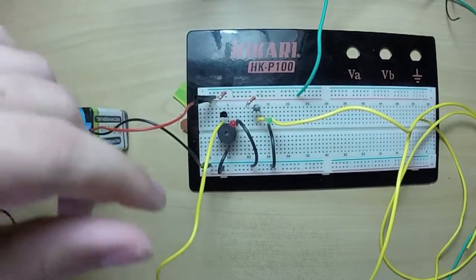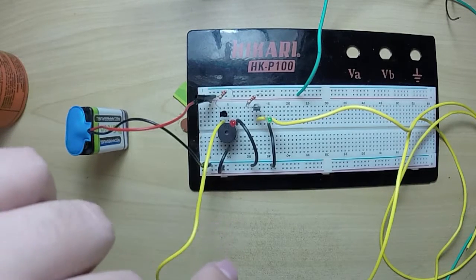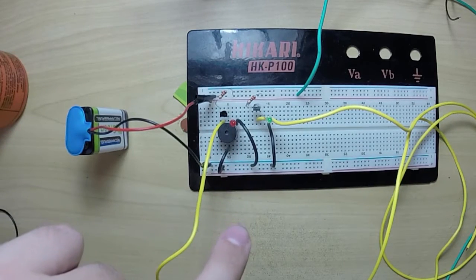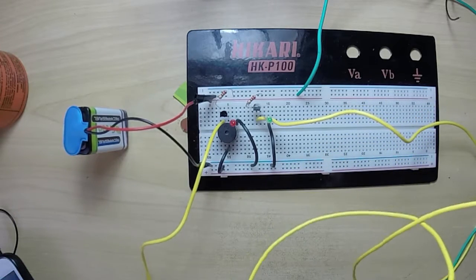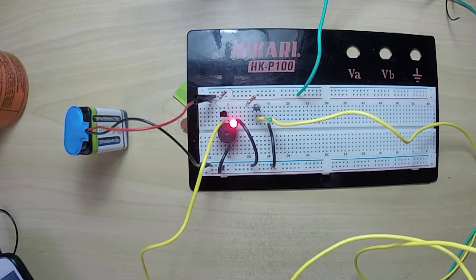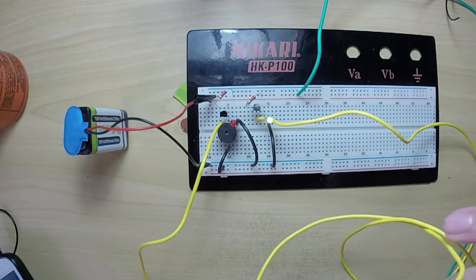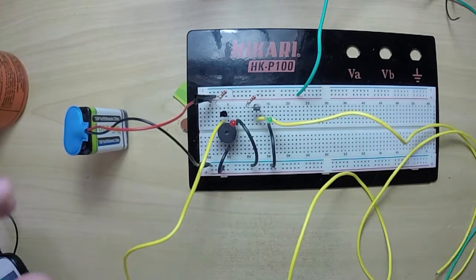The first thing we need to do before we do that is make sure everything's working. When I did the last tutorial I didn't have two 547 transistors but now I do. I went to the store and let's make sure everything's working. That's the red one working, that's the green one working. Everything works.